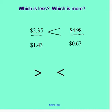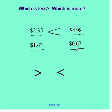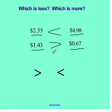Next example: $1.43 compared to $0.67. Looking at the dollars, here I have $1 and over here I have $0. I know $1.43 is greater than $0.67.